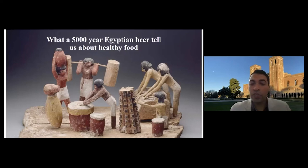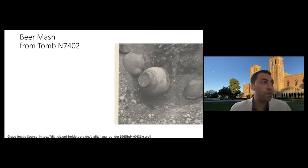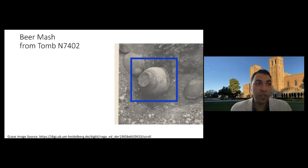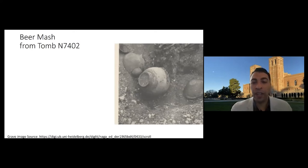I'm excited to share a special finding from this site and speak about what a 5,000-year-old beer buried in an Egyptian tomb tells us about the food and health of people in the past. In this tomb, the archaeologist discovered a wavy-handled jar and noted an oily sediment — basically an oily sandy soil — but left no further notes or study of what it could be.